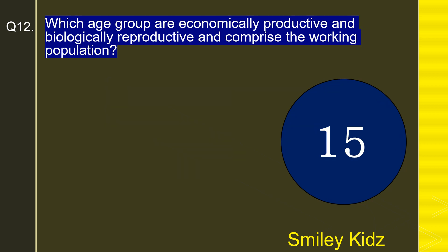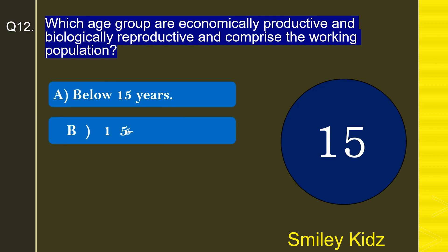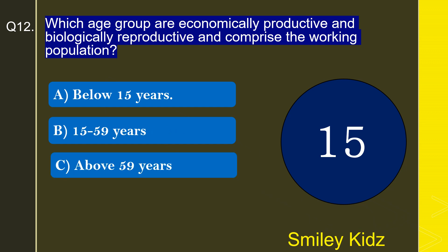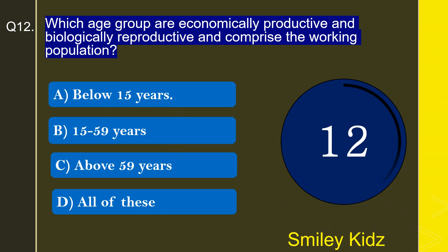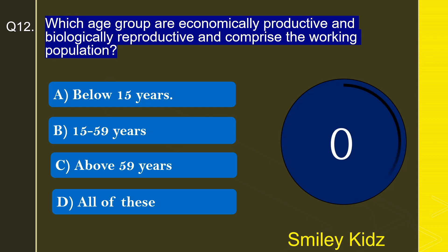Question number 12: Which age group is economically productive and biologically reproductive and comprises the working population? Options are below 15 years, 15 to 59 years, above 59 years, or all of these. The correct answer is 15 to 59 years. The 15 to 59 years age group is economically productive and biologically reproductive and comprises the working population.